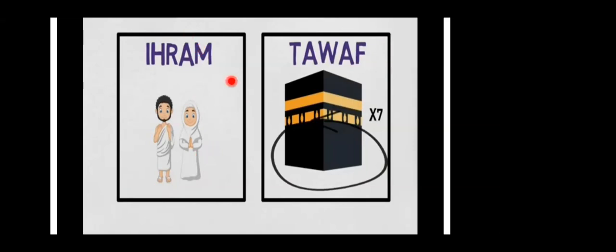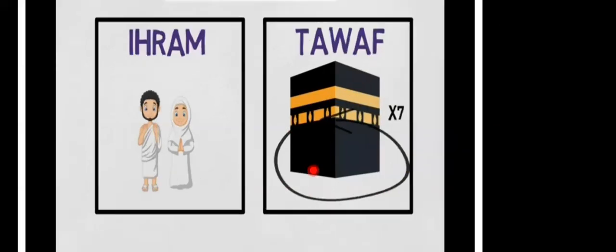Now next is Tawaf. Tawaf means praying and circling the Kaaba seven times. The Muslim pilgrims who are performing Hajj circle the Kaaba seven times — that is known as Tawaf.